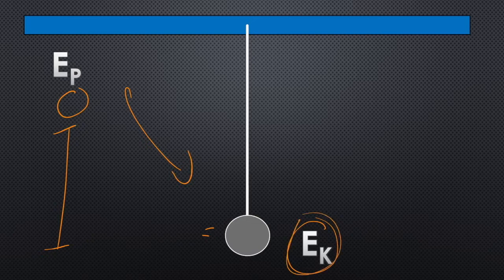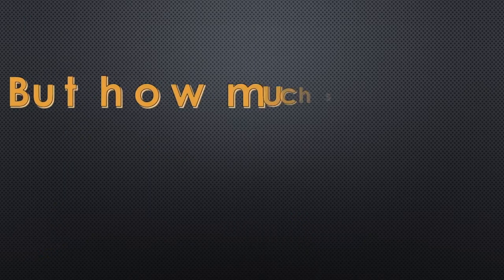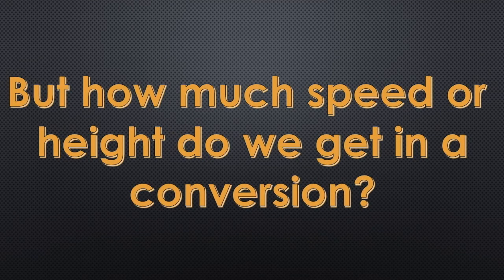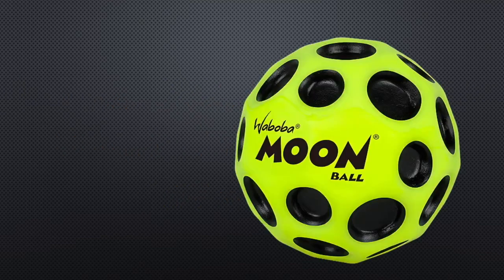But more than just knowing what types are being converted, we want to know how much energy, speed, or height we get out of an energy conversion. So how could we calculate how high something is going to go, or how fast? Another example of energy conversions is a bouncy ball — it starts with potential energy, you drop it, it goes to kinetic, it bounces, and then goes back up to potential.